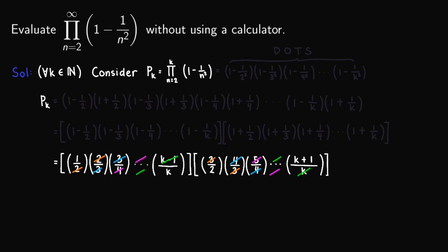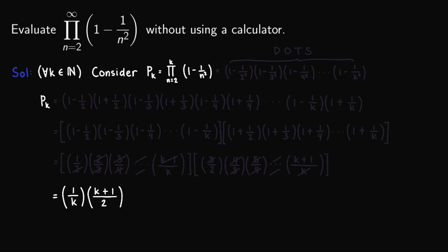And so upon those cancellations, we'll be left with 1 over k times k plus 1 over 2. So as you can see from a very complex expression, we just obtain this simple and nice-looking expression. We can even make this look nicer. We can factor out the one-half, so we'll be left with one-half times k plus 1 over k. And then take note that the k plus 1 over k out here is a mixed fraction. So we can convert this to an improper fraction to obtain 1 half times 1 plus 1 over k. So we have this.